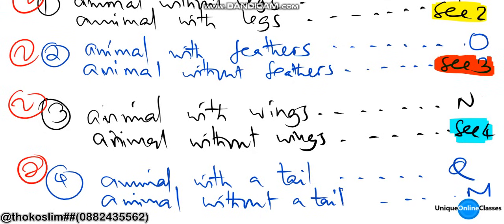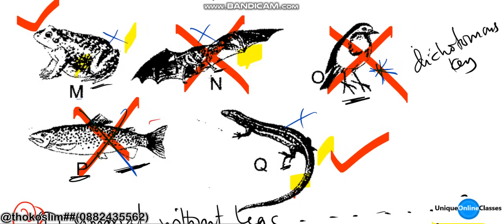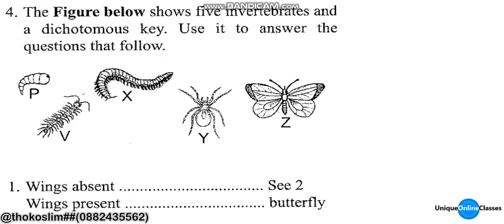If you are enjoying this video, please don't forget to subscribe to my channel. Let's now move forward. The question is: the figure below shows five invertebrates and the dichotomous key. Answer the question therefore — so we have five invertebrates.